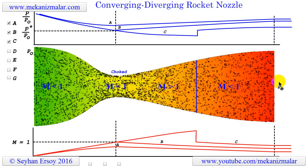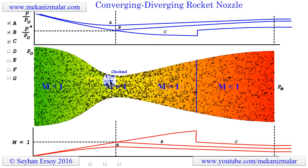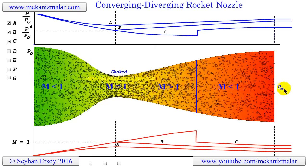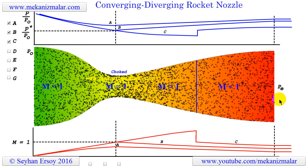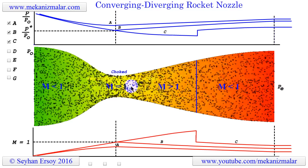However, we have now learned something. Reducing the exit pressure below the point of the choked flow exit pressure creates supersonic flow inside the diverging section of the nozzle.